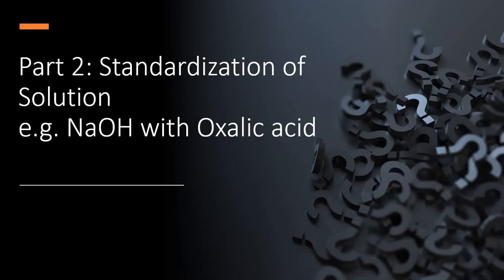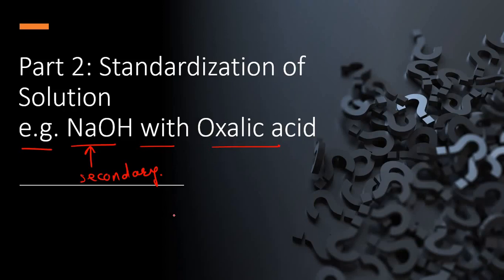We will now see Part 2 — standardization of solution. We are taking the example of NaOH with oxalic acid. NaOH is a secondary standard solution; when prepared as 1 normal, it cannot show exact normality since its normality changes with temperature or pressure. Oxalic acid is a primary standard solution with exact normality. We standardize NaOH using oxalic acid, and then use the standardized NaOH for titration with HCl.